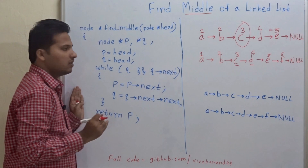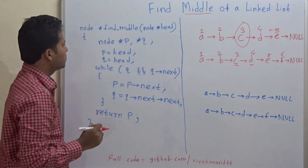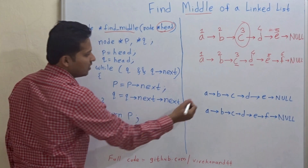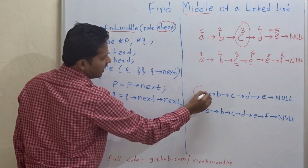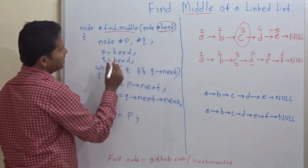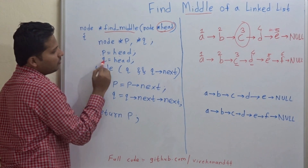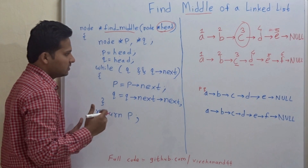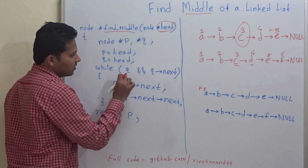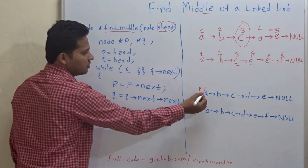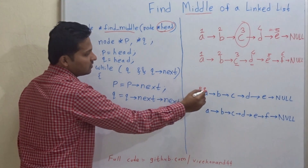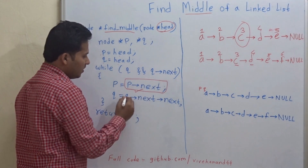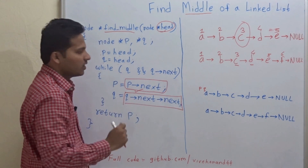Let's see how to find the middle of a linked list using this code. The function is findMiddle, and the head of the linked list is passed to it. We will execute the code on the first linked list. Both p and q will point to the head node A. The while condition checks whether q is not null and q->next is not null.